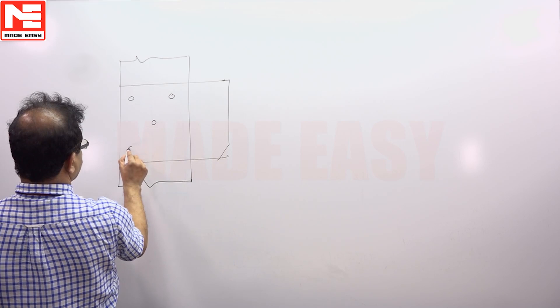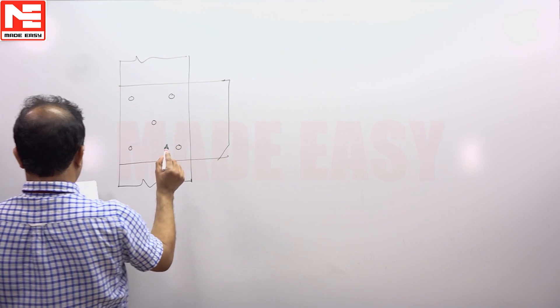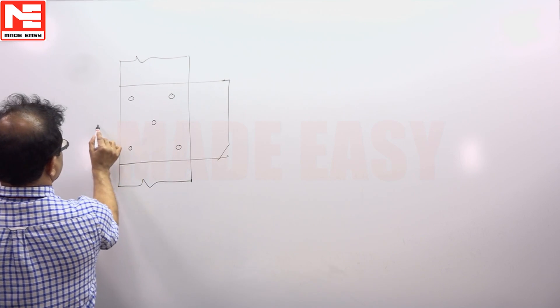One, two, three, four, five. CG of the bolt group is here.